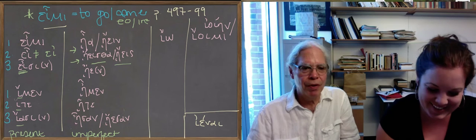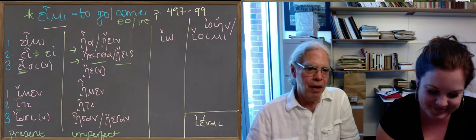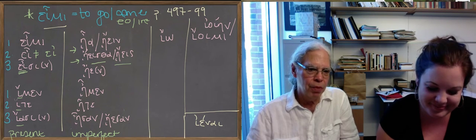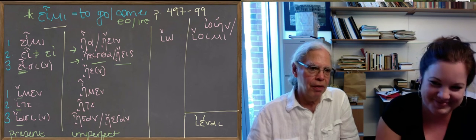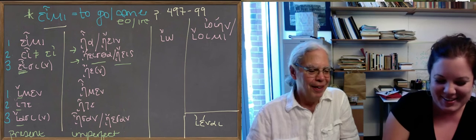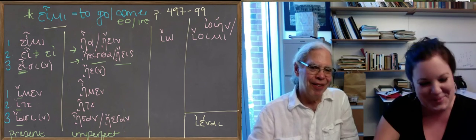And the plural is much more straightforward. ᾖμεν, ᾖτε, ᾖσαν. That's the third person plural ending you expect. You've got the thematized one with the epsilon ᾖσαν, like ἴᾱσι, and so forth. It's not so bad.